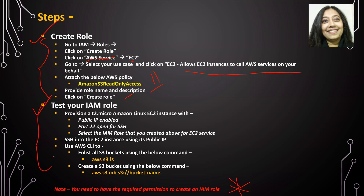In order to test our role, we will go ahead and provision a T2 Micro Amazon Linux EC2 instance with public IP enabled and port 22 open. The role that we just created — we will select that IAM role and associate it to our EC2 instance. After that, we will SSH into our EC2 instance. Remember, the role provides read-only access to S3, so we will try to list all our buckets, and then we will also try to create a bucket, and let's see what happens.